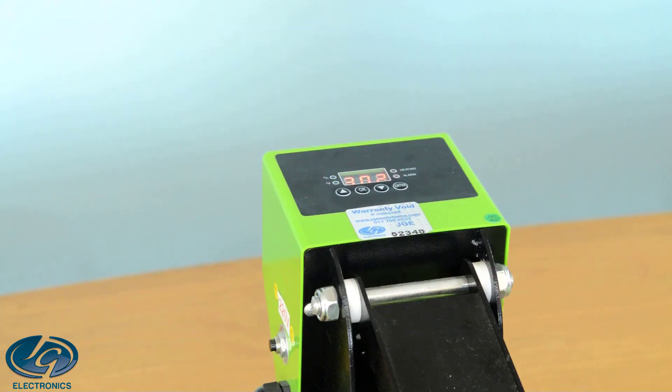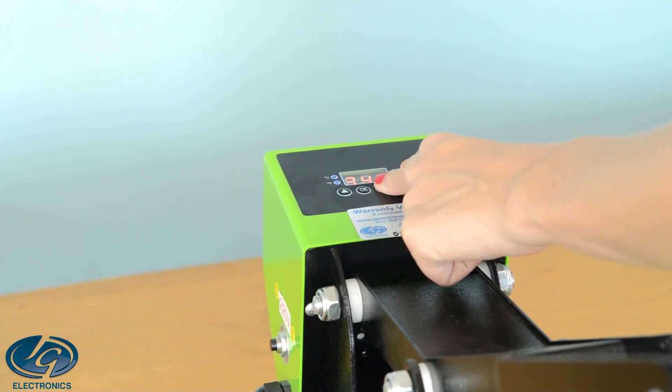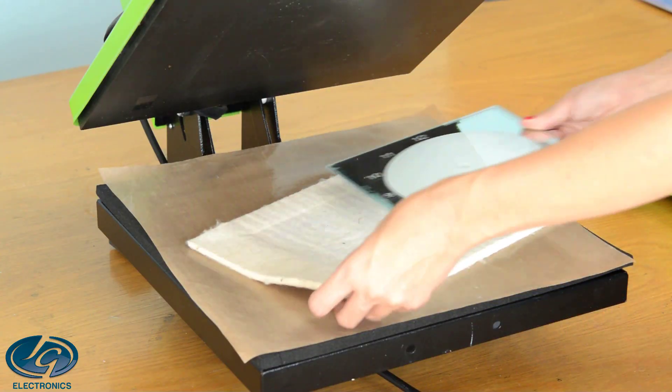Set the press to 190 degrees Celsius and 4 minutes. Print your artwork but make sure it is not printed in mirror image.